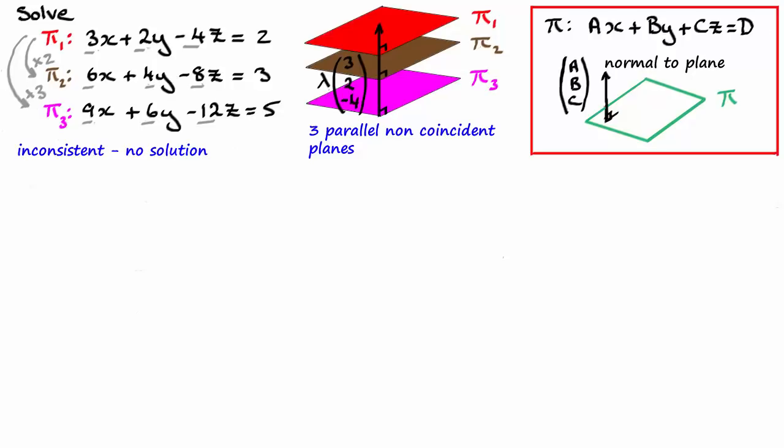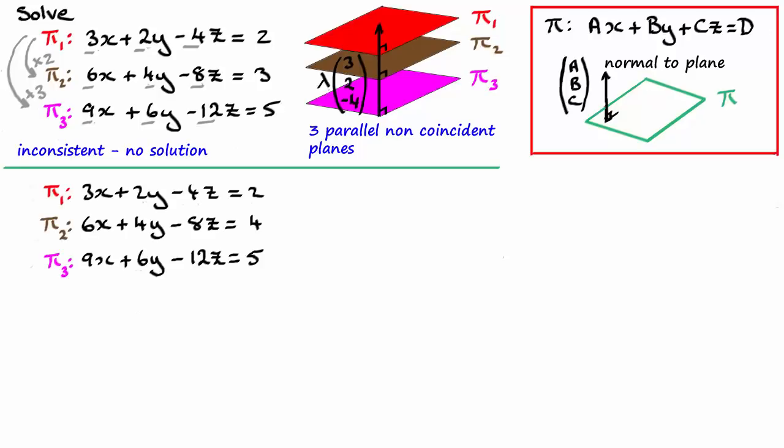Let's have a look at another type of question. Suppose I take the same equation for pi one and pi three as we had in this example up here. So already we've seen from above that pi one and pi three, those two planes there are going to be parallel and non-coincident. Because I can take the values three, two, negative four, multiply these by three and I get the nine, the six and the minus twelve.